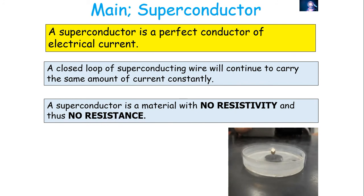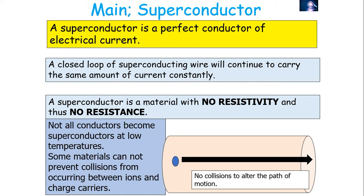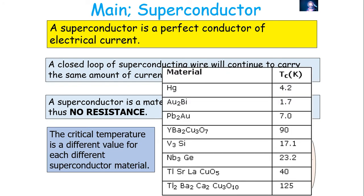A superconductor is a perfect conductor of electrical current — a material with no resistivity and no resistance. A closed loop of superconducting wire will continue to carry the same current constantly. A superconductor loses all resistivity below a certain temperature because there are no collisions between the material's ions and mobile charge carriers. However, some materials cannot prevent collisions even at very low temperatures, so they don't become superconductors.